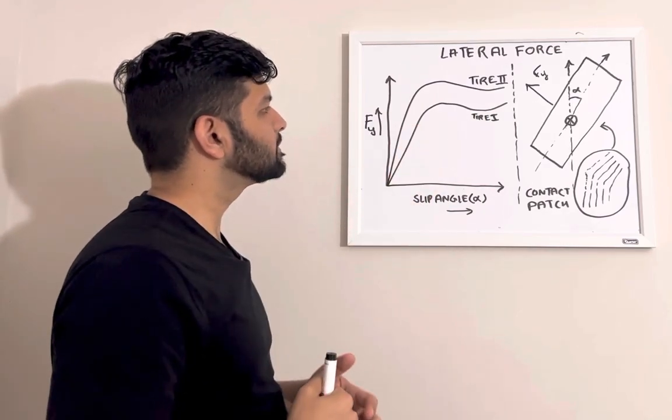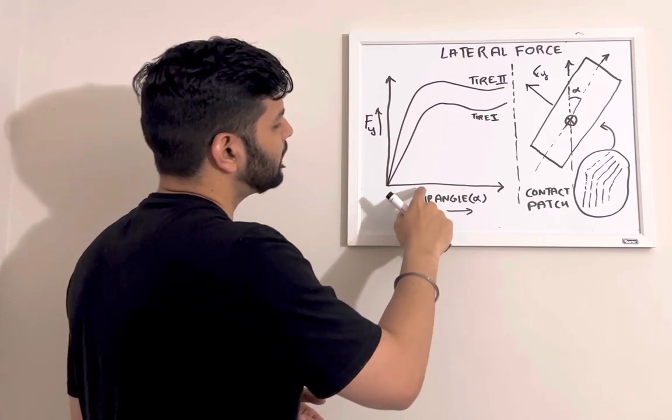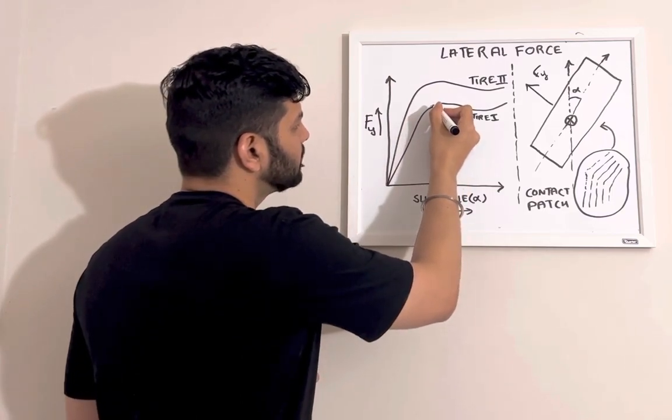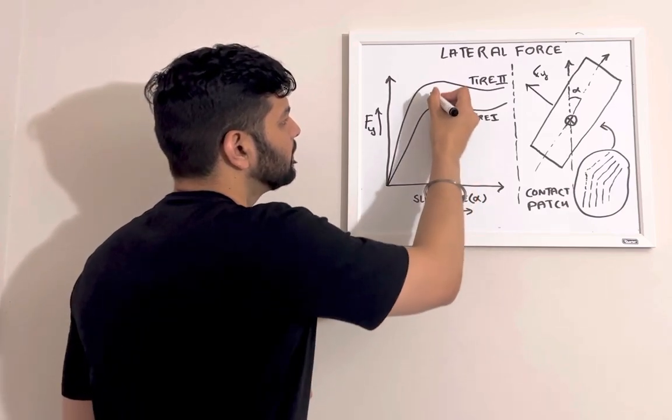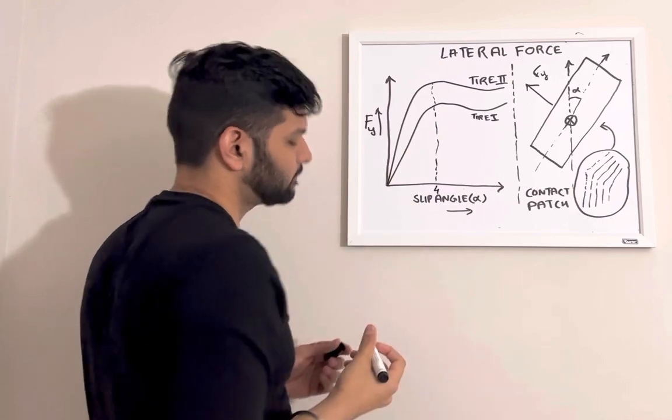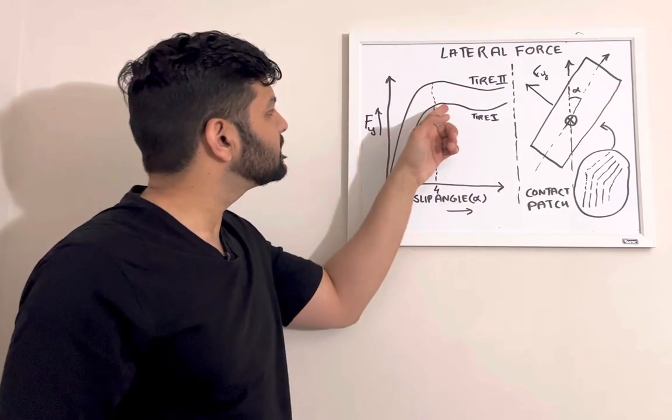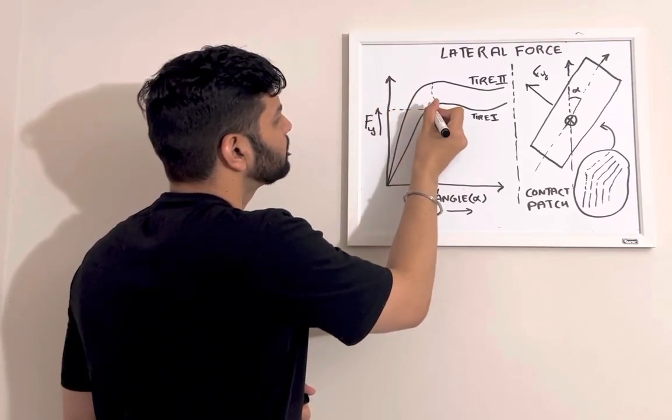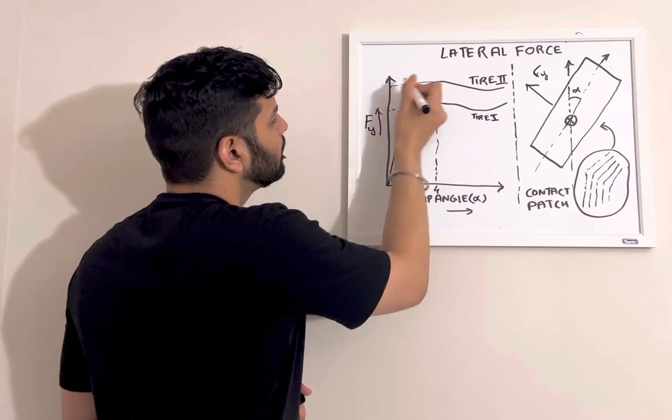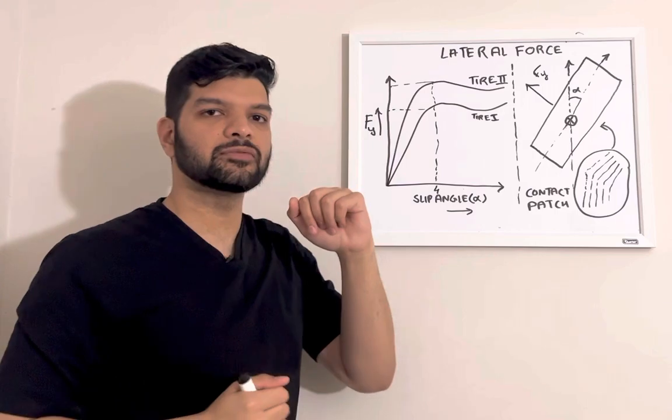What it means is, if you look at tire 1, at the same amount of slip angle - if you assume it to be like 4 degrees, the same amount of slip angle for both tires - tire 1 generates a lesser amount of lateral force. For the same amount of slip angle, tire 2 generates a higher amount of lateral force.